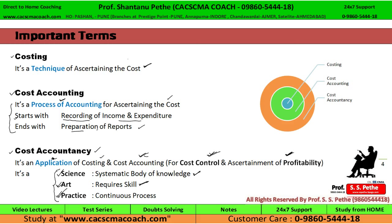Agar ye teeno terms exam mein ek saath puchi jaati hain, to aapko pehle ye definitions likhni hain aur explain karna hai. Uske baad ek diagram aap yahan draw kar sakte hain — jisme Costing, Cost Accounting aur Cost Accountancy ka ek chart aap bana sakte hain. Costing is the smallest term, Cost Accounting is a broader term, and the broadest term is Cost Accountancy.